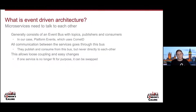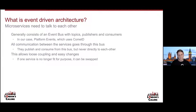The next thing we need to understand is event-driven architecture. These microservices are all well and good, but they need to be able to talk to one another, and that's where an event-driven architecture comes in. You can think of it sort of like Twitter. The architecture generally consists of an event bus with topics, publishers, and consumers. In our case, our event bus is platform events, which underneath uses a technology called CometD. All communications between microservices go through this bus — they publish and consume from it, but never directly talk to one another, allowing for loose coupling and easy changes.